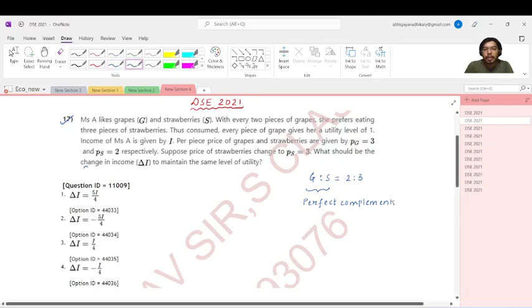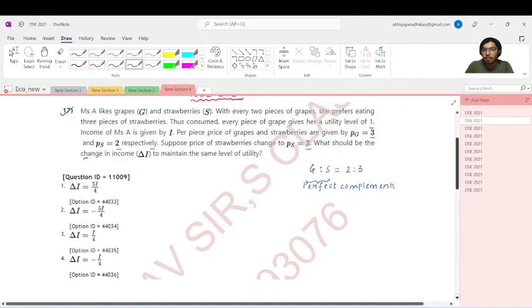Now continuing with the question, thus consumed every piece of grapes gives her a utility of one. Income of Mrs. A is I, and per piece prices of grapes and strawberry is PG equals three and PS equals two respectively. Now suppose the price of strawberry goes up to rupees three. What should be the change in income delta I to maintain the same level of utility?